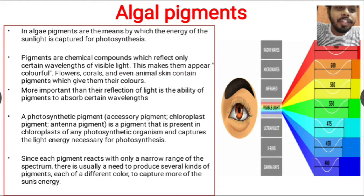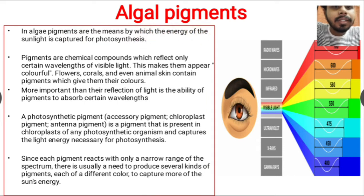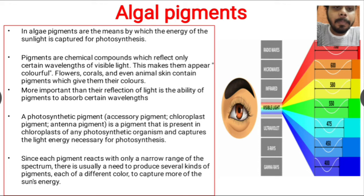Hello friends, today in this video we are going to discuss about the algal pigments which are present in algae. In algae, pigments are the means by which the energy of sunlight is captured for photosynthesis. A particular wavelength of sunlight is captured by particular pigments, and then this wavelength of sunlight is used for photosynthesis.